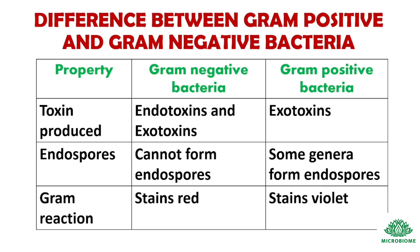Regarding endospores: gram-negative bacteria cannot form endospores, while some gram-positive genera can form endospores. In the gram reaction: gram-negative bacteria stain red, and gram-positive bacteria stain violet.